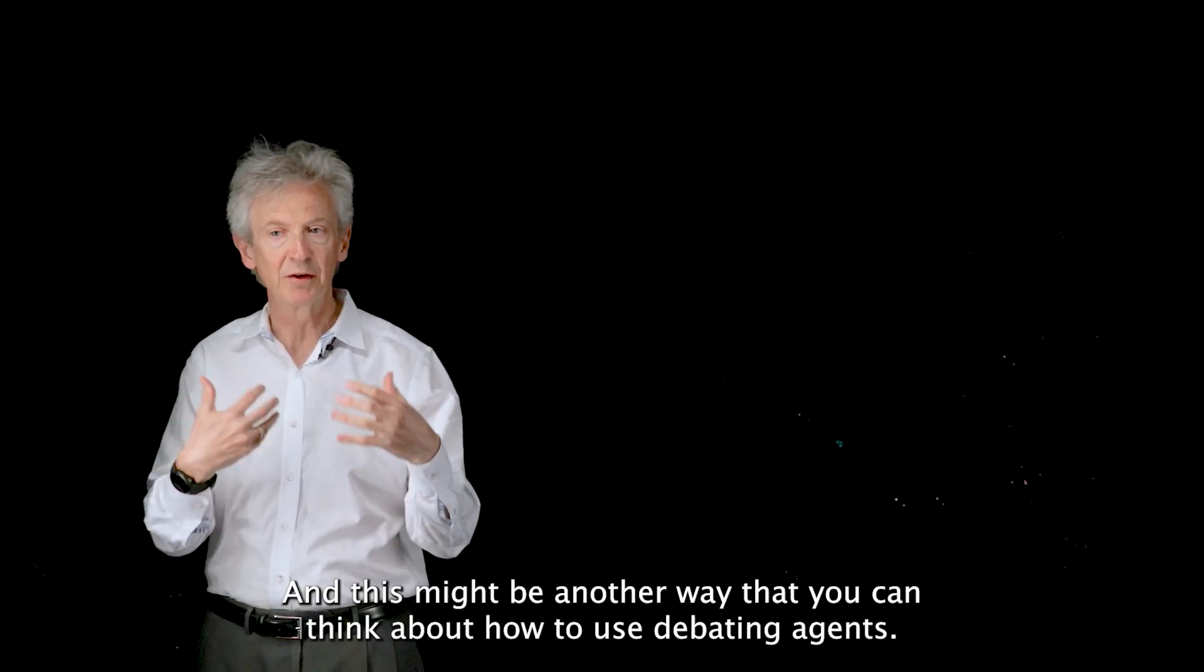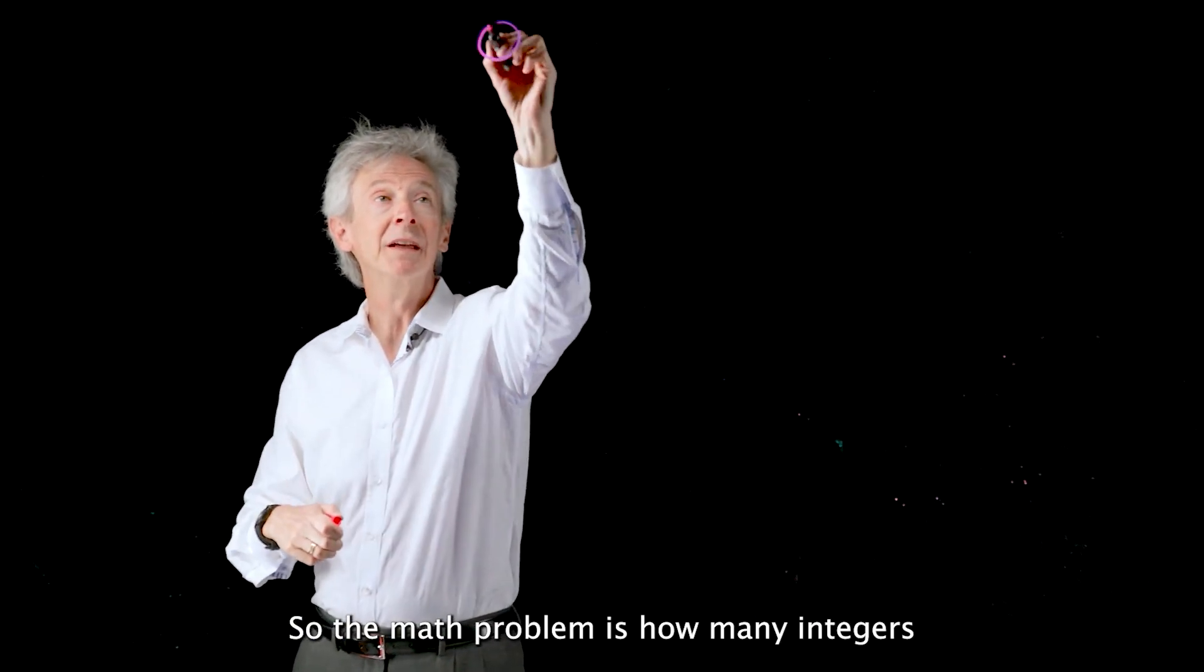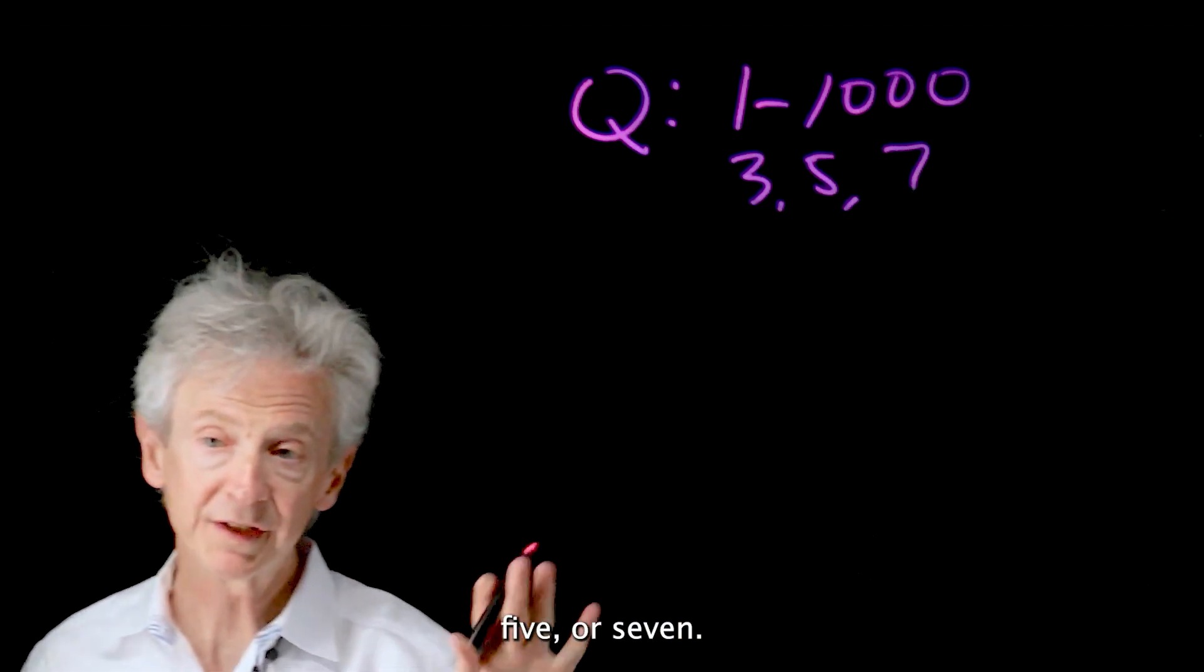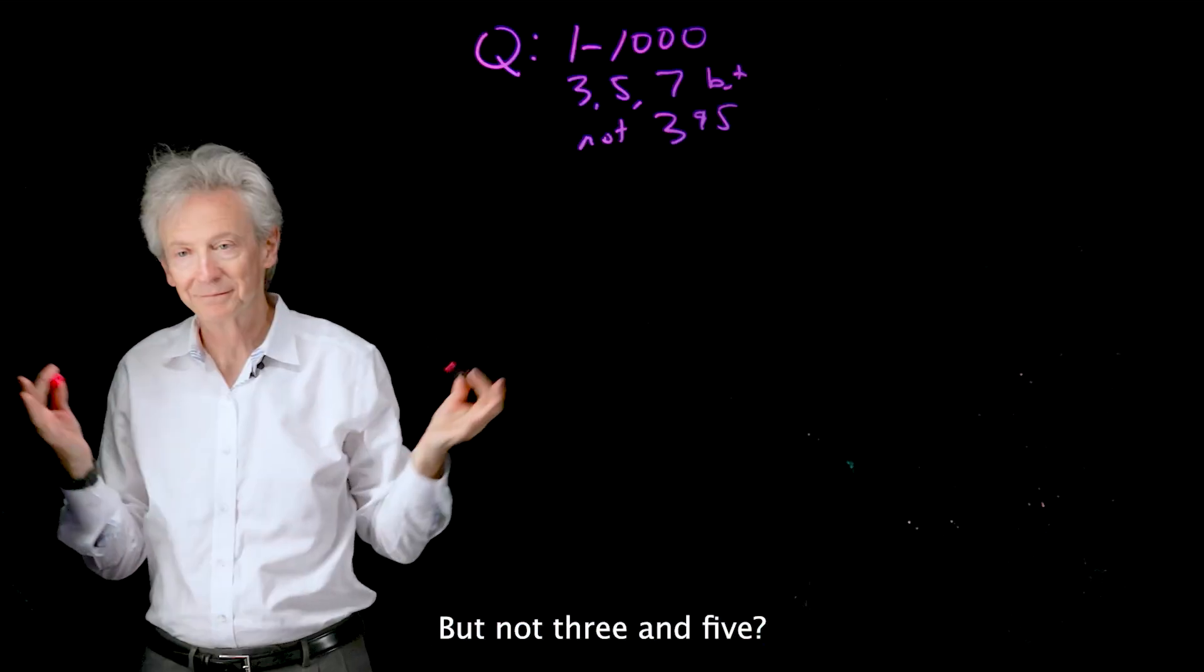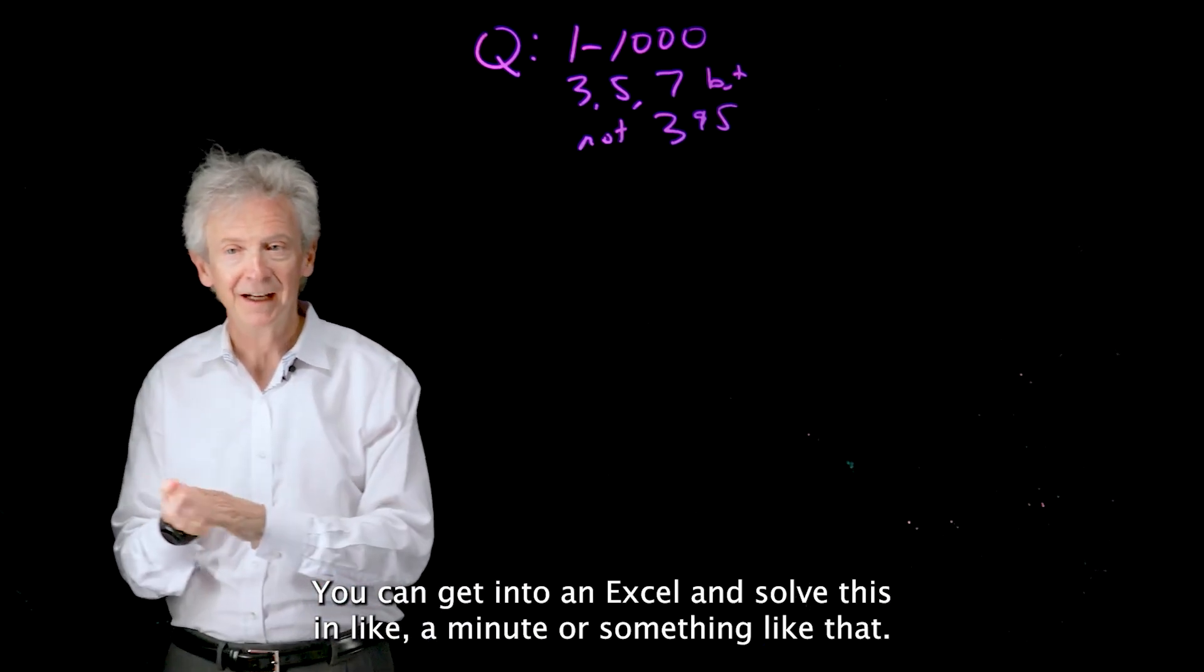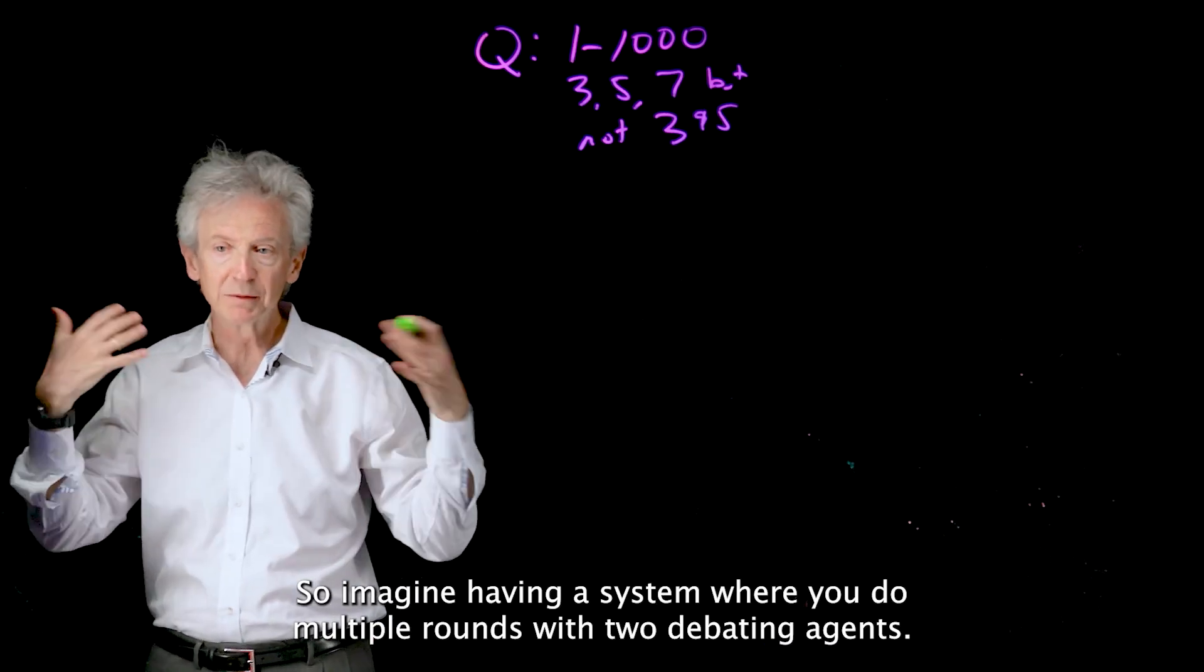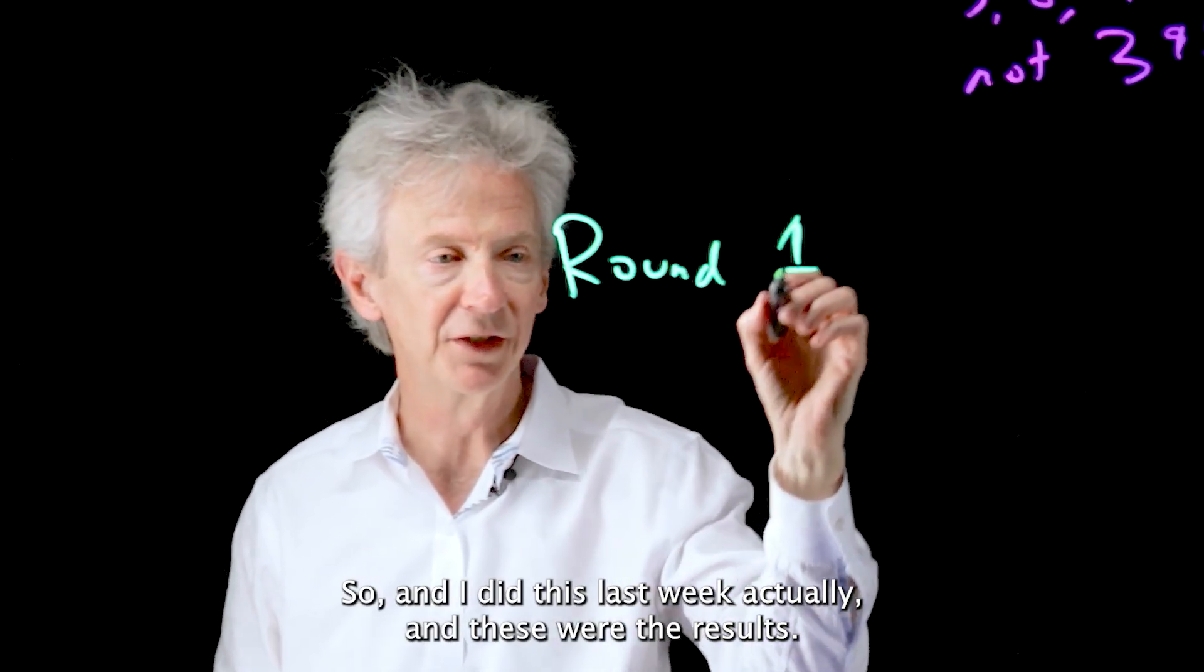Alright, let me give you another example, and this might be another way that you can think about how to use debating agents. It's also a math problem. So the math problem is how many integers between one and one thousand are divisible by three, five, or seven, but not three and five. So not the world's most complicated math problem. You can get into an Excel and solve this in a minute or something like that. But anyway, math is something LLMs have had trouble with. So imagine having a system where you do multiple rounds with two debating agents. And I did this last week actually, and these were the results.